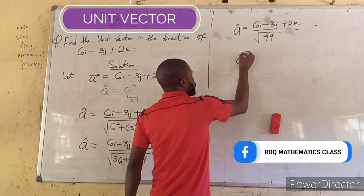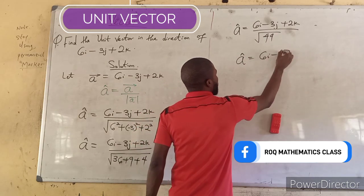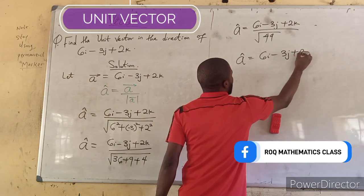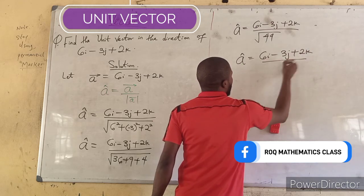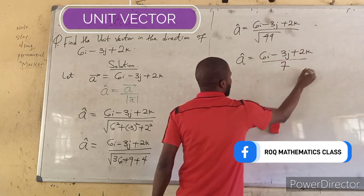So, our unit vector a will now be 6i minus 3j plus 2k divided by square root of 49 is 7.